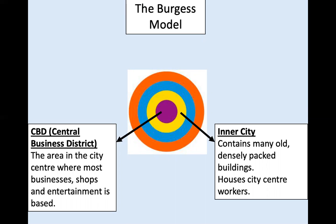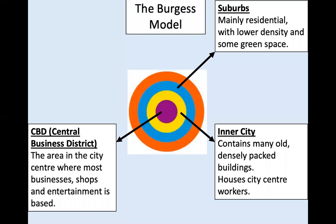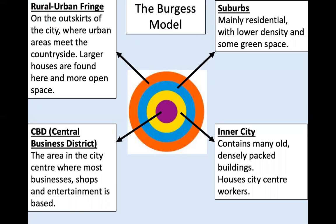Although this is changing in many cities in modern times. The next layer or zone are the suburbs. These are mainly residential areas with lower density population and some green space. The outer zone is the rural urban fringe — the outskirts of the city where urban areas meet the countryside. Here there are larger houses, a lot more open space, and often high quality facilities.